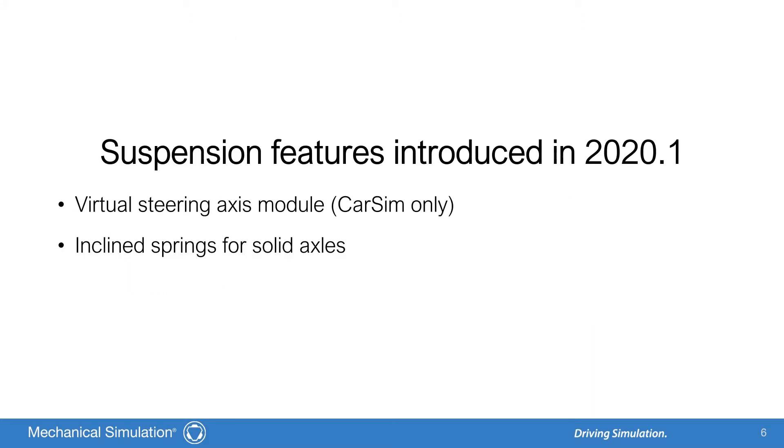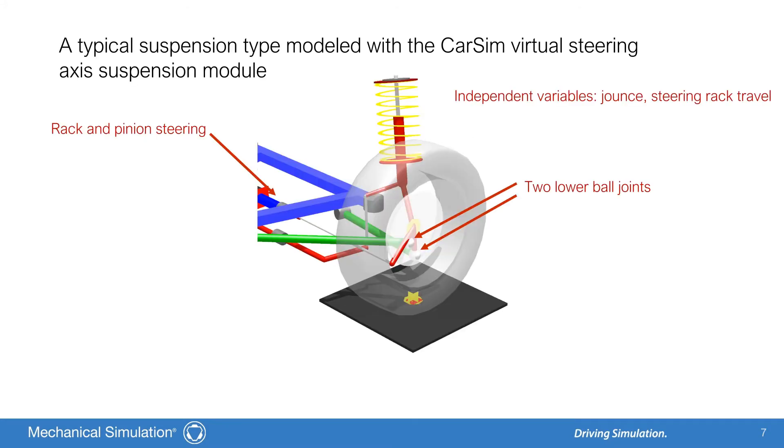With that background in mind, I'd like to discuss suspension features introduced in 2020.1, the virtual steering axis suspension module and support for incline springs for solid axles. The virtual steering axis suspension module is unique to CarSim and is the newest module introduced in CarSim 2020.1. This module defines the motion of a wheel relative to the sprung mass as a function of jounce and steering rack travel. This module is used for modeling steered suspensions which have no fixed kingpin geometry, like a strut type which has the lower control arm divided into two separate links.